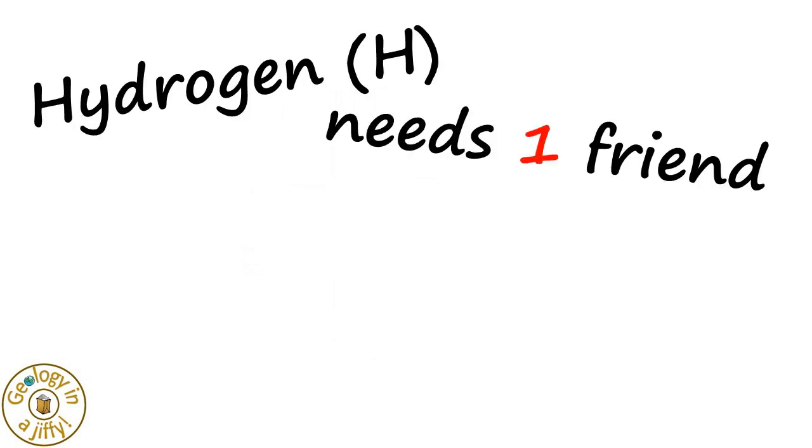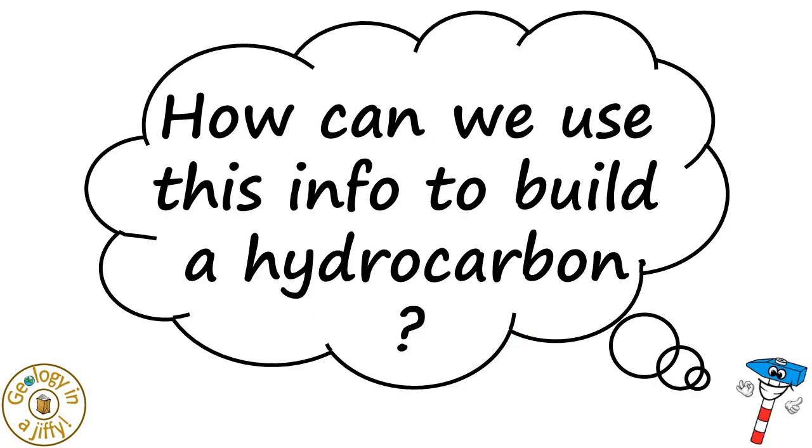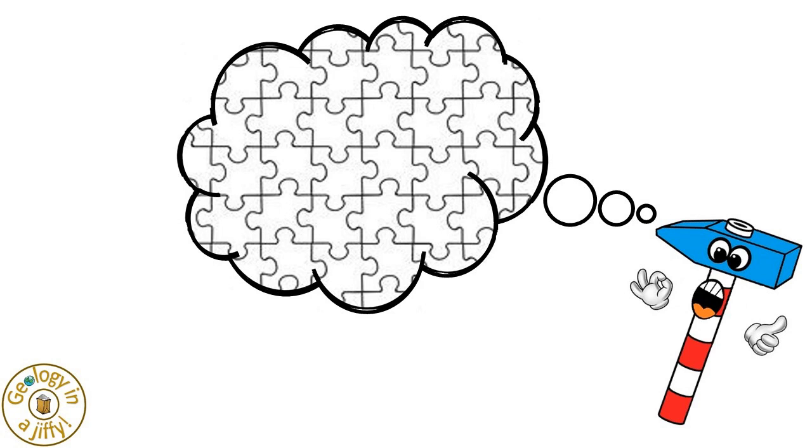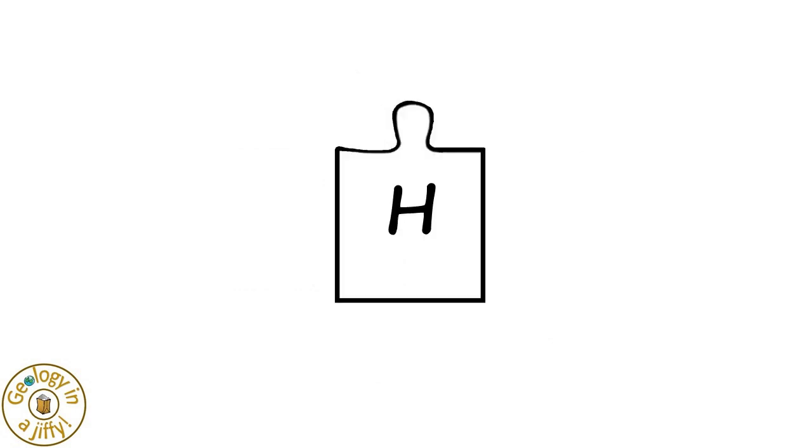So hydrogen needs one friend and carbon needs four friends. How can we use this info to build a hydrocarbon? An easier way to understand how to build a hydrocarbon compound is to think of a jigsaw. Let's pretend carbon is one type of jigsaw piece. This jigsaw piece can join with four other jigsaw pieces. Let's also pretend that hydrogen is another type of jigsaw piece. This jigsaw piece can join with only one other jigsaw piece.